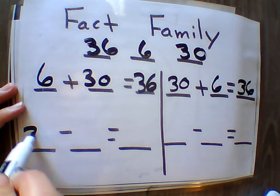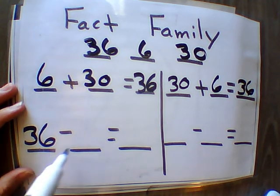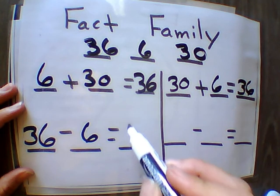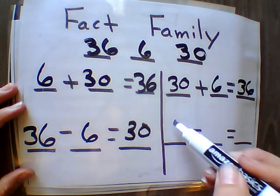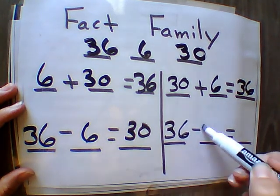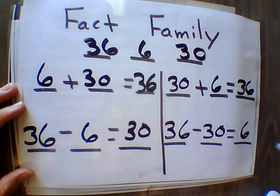Then we're taking our larger number, 36, minusing one of the smaller. So 36 minus 6 equals 30. And then 36 minus 30 equals 6.